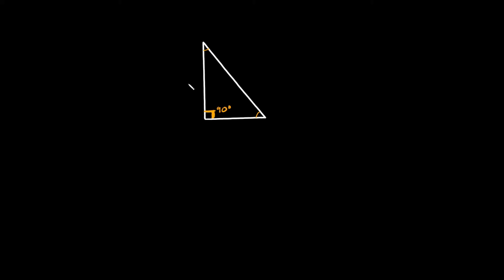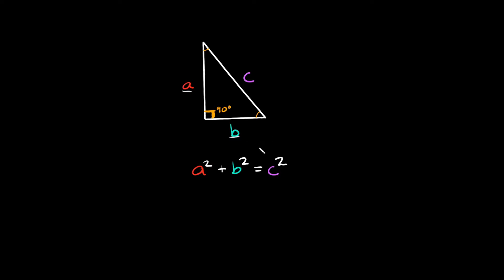Let's label the sides of this triangle. We'll call this side A, this side down here B, and this one C. The formula is A squared plus B squared is equal to C squared. A and B will always be the two shorter sides of your triangle.